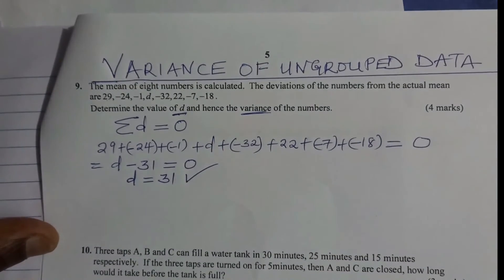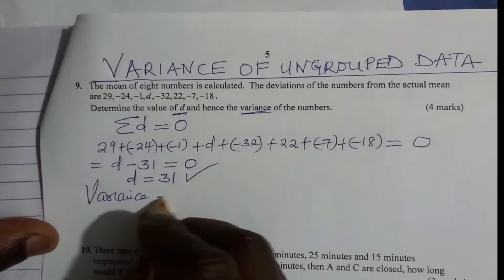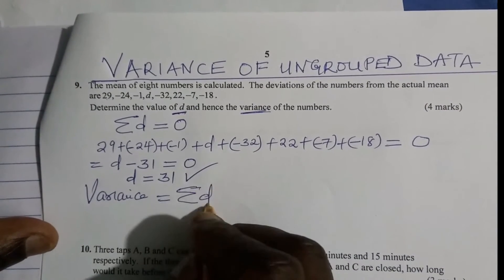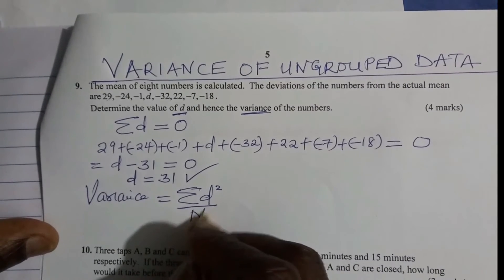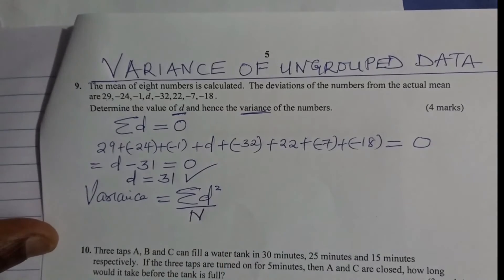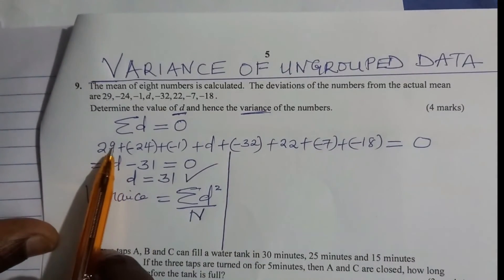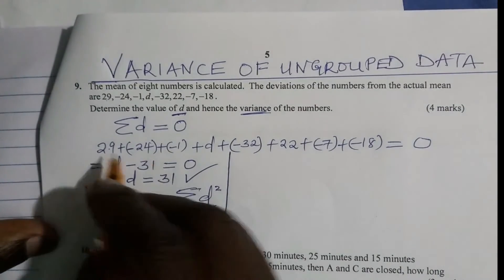So how do you get the variance of ungrouped data? Variance of ungrouped data is given by the sum of the deviations squared divided by the total frequency, that is N. The sum of the deviations squared is quite easy — we just need to square everything. These are the deviations from the mean, so we add and get the squares.